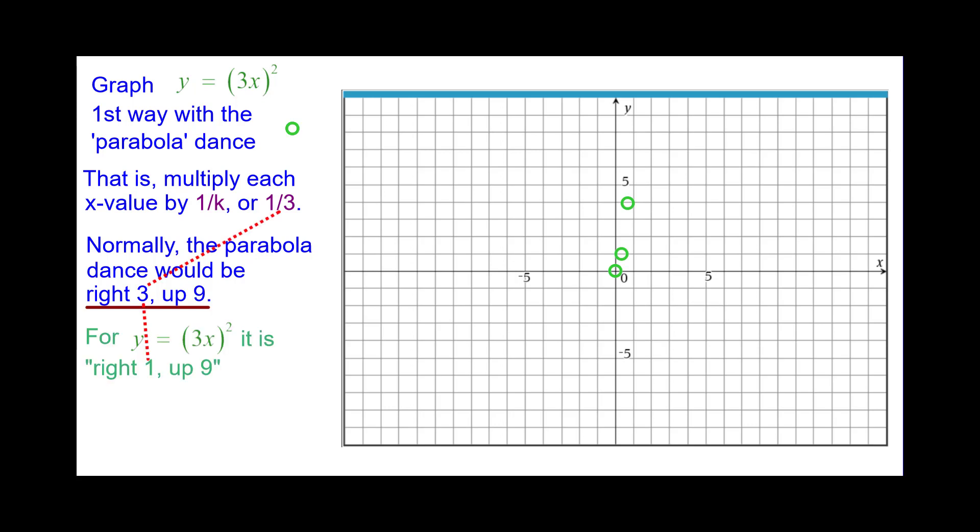And right 3 up 9 will become right 1 up 9. 1 third times 3 is 1. So see if you can do the remaining points. Press pause and zoom when you're ready.